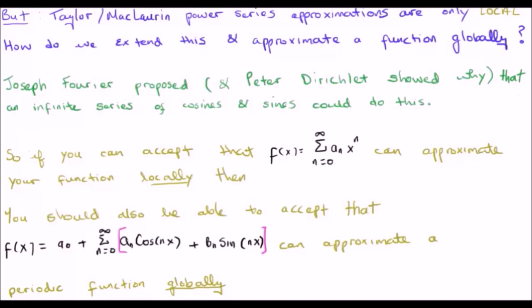Well, Joseph Fourier proposed, and Peter, well, I'm not going to try this name, this man showed that an infinite series of cosines and sines is able to represent a function globally.